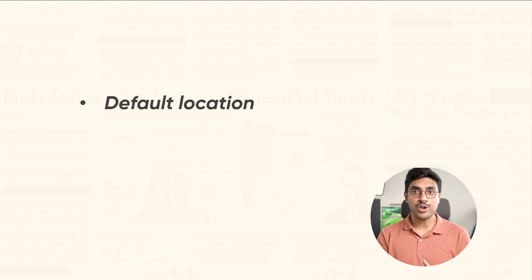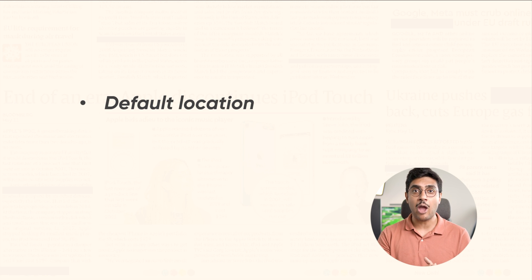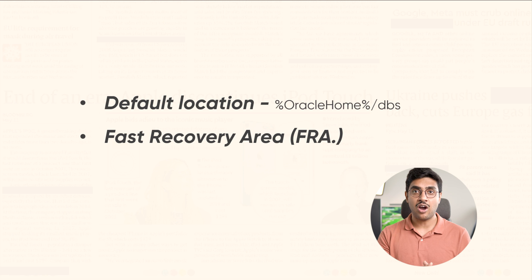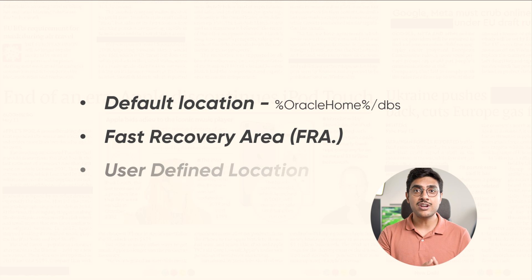Usually there are three locations where the files generated by auto backup of the control files are placed. First, the default location — if you have not configured the FRA, then the backup pieces generated by auto backup are placed at the default location, which in most cases is Oracle Home slash DBS. Second, the Fast Recovery Area or FRA — if you have set the FRA, then auto backup will generate the files there. Third, a user-defined location.